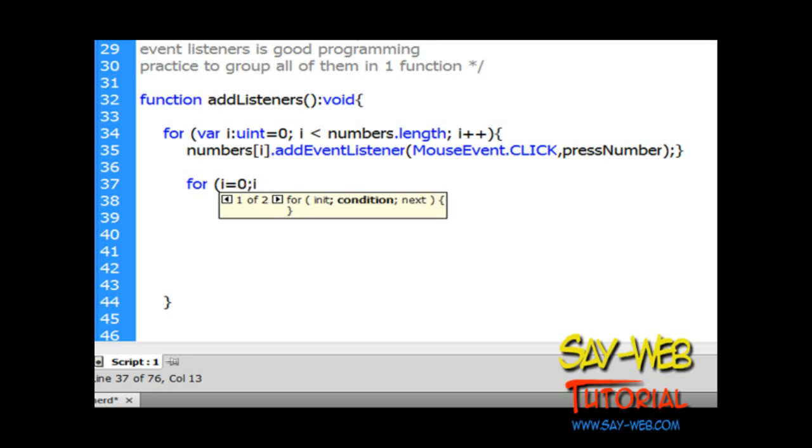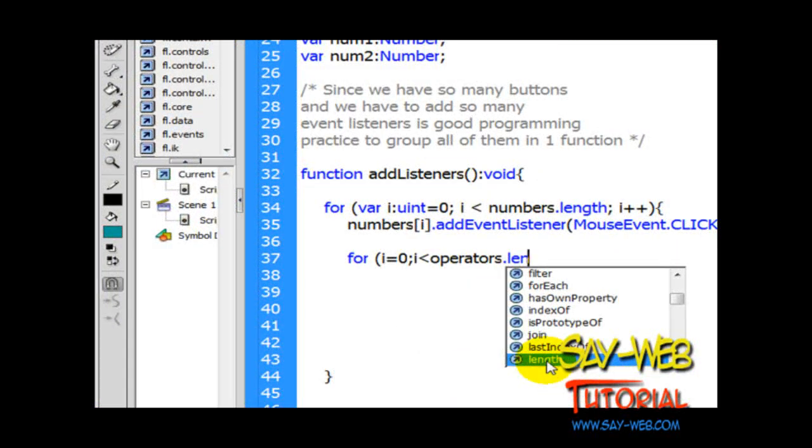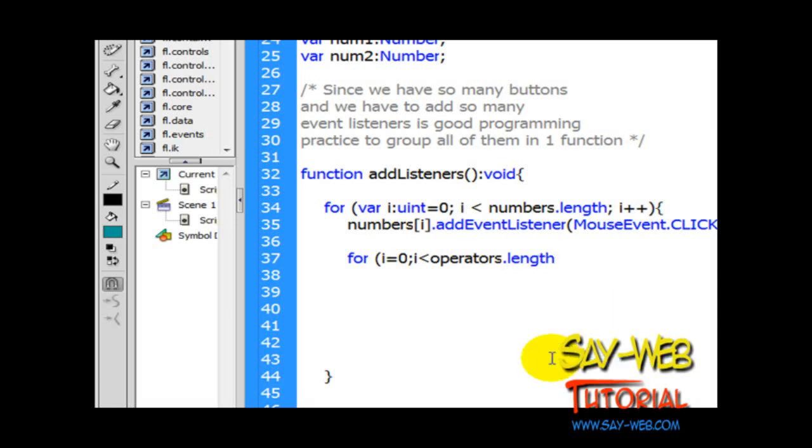Now let's do the same thing for our operators. Divide minus. Make sure that the spelling of the instance names that shows on the code is identical to the spelling of the instance names we entered on the stage.